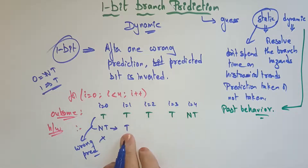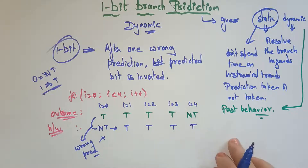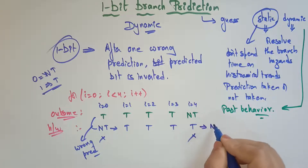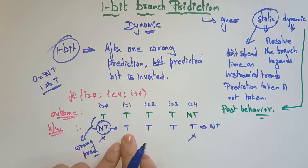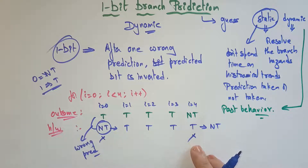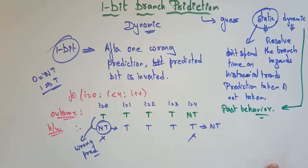After the wrong prediction, not-taken is inverted to taken. The hardware continues predicting taken for the remaining iterations. But when i = 4 the outcome is not-taken while the hardware predicts taken — another wrong prediction — so the bit is inverted back to not-taken. That is 1-bit dynamic branch prediction. Here only 2 clock cycle stalls occur. It is trying to reduce hazards by using hardware implementation.